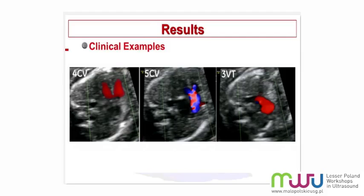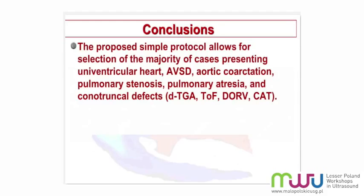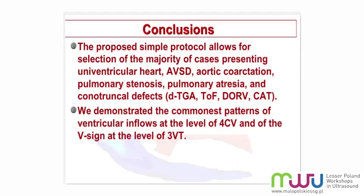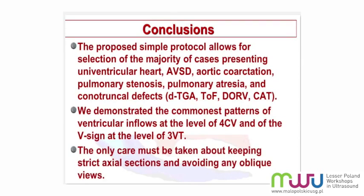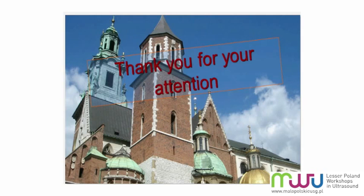To conclude, the proposed simple approach is achievable by first-line examiners and is quite effective in selecting patients who demonstrate cardiac abnormalities. In my opinion, it is better than indirect methods like nuchal translucency and others. We demonstrated the commonest patterns at the level of the four-chamber view and three-vessel and trachea view. The only caution is to maintain strict axial views and avoid any oblique positions, as these can lead to incorrect diagnoses and suspicions. Thank you very much for your attention.